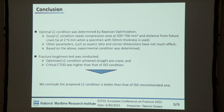Conclusion: An optimal LC condition was determined by Bayesian optimization. Good LC condition needs a compression area of 500 to 700 mm² and a distance from the future crack tip of 2 to 6 mm when the specimen with 15 mm thickness is used. Other parameters such as aspect ratio and corner dimensions had little effect. Based on these results, an experimental condition was determined and a fracture toughness test was conducted. The optimized LC condition achieved a straight pre-crack, and the critical CTOD was higher than that of the ISO condition. Therefore, we conclude that the proposed LC condition is better than the ISO-recommended one. Thank you for your attention.